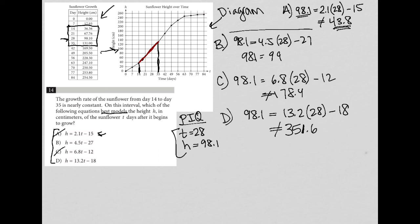That means choice B is by far the closest, by far the best model. Choice B is the best answer out of the options we have here.